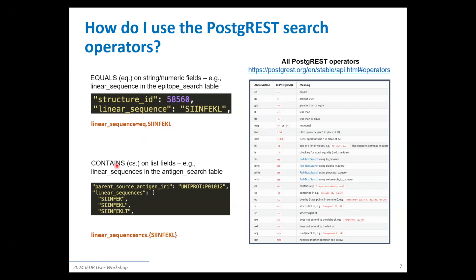The other commonly used operator is the contains operator, which is how you search on array fields. For example, in the antigen search table, because linear sequences are associated with multiple assays and epitopes, they get collapsed into array fields. You would need to use a contains or overlap operator within curly braces to indicate you want to search for linear sequences containing a particular value, since they could have multiple.